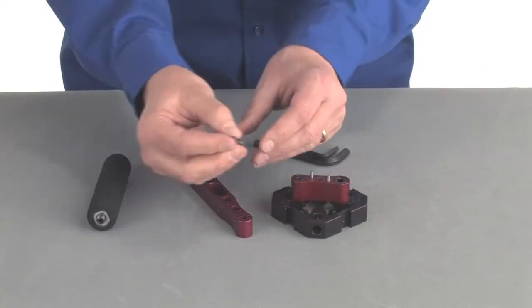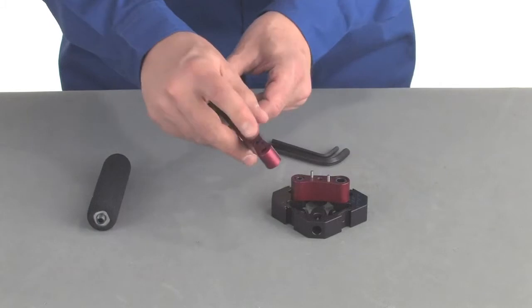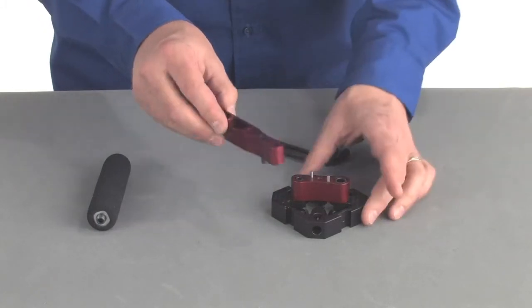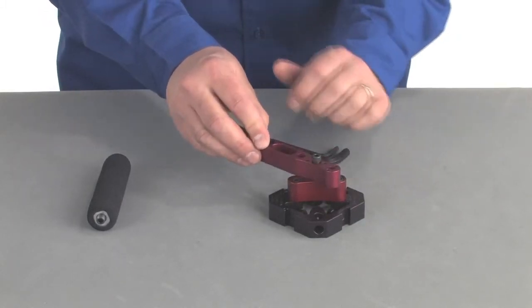Okay, next, we want to make sure that our quarter-twenty drops into the handle. It's flush, and the threads come out the other side. Line it up so the pins and the holes and the bolt all match.